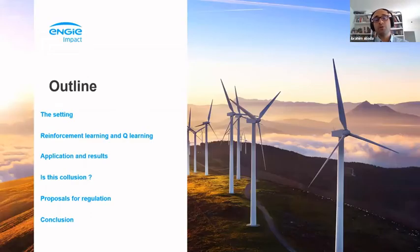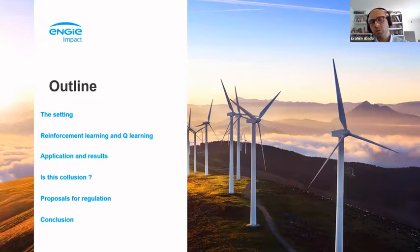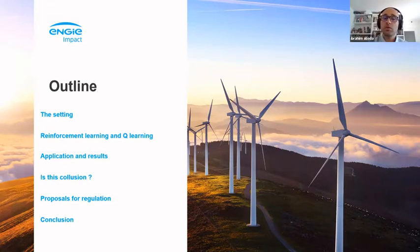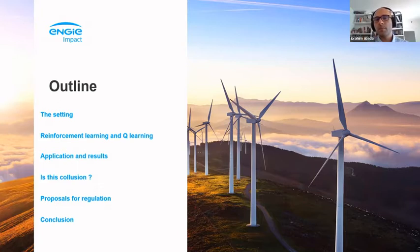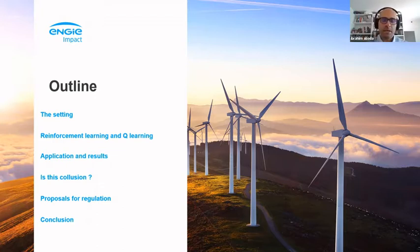This is the outline of my presentation. I will start with the setting applied to power markets, then talk about the algorithms we use — namely reinforcement learning and Q-learning. I'll show our main results where you'll see that collusion can occur in these markets, then look at the main drivers of collusion and whether punishment strategies are deployed. Finally, we will propose some regulation perspectives to tame collusion and mitigate market power before concluding.